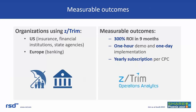We're all concerned with measurable outcomes. Currently, organizations benefiting from ZTRIM Operations Analytics include insurance companies, financial firms, state agencies, and major banks across Europe. We propose you will actually realize a 300% ROI in nine months. ZTRIM is easy to purchase — we have a subscription pricing model per CPC, with no additional cost for the size of your environment or the amount of data you're storing. We'd ask you to let us do a one-hour demo with your data. The product actually implements in one day — you can be up and running and reviewing your consumption information in one day.